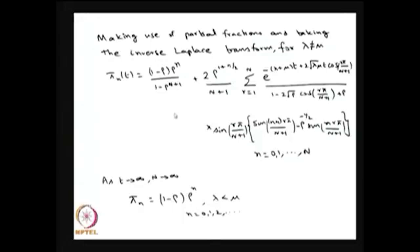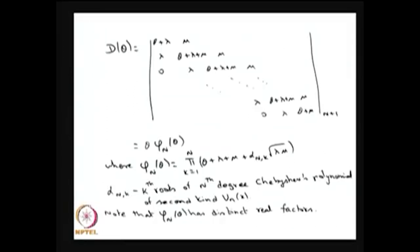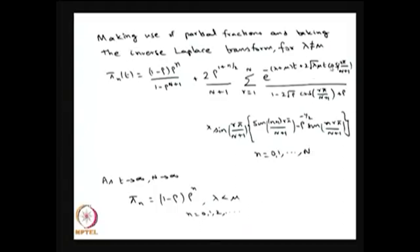The same logic goes for the M/M/C/C model, with the difference that in the determinant, instead of μ you have μ, 2μ, 3μ, and so on, and instead of the Chebyshev polynomial you end up with the Charlier polynomial. However, unlike the Chebyshev polynomial, the Charlier polynomial does not have closed-form roots, so you will end up with numerical results for the transient solution of the M/M/C/C model.